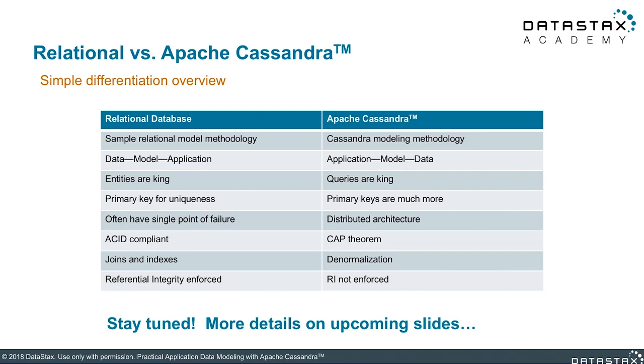Specifically, Cassandra does not provide support for ACID transactions or joins. It does not enforce referential integrity across tables because it can't guarantee high performance of these operations at large scale. These are things we need to be aware of in designing our Cassandra data models. In the next few slides, we'll learn some techniques we can use in our data modeling and application design to deal with this reality, including denormalization and leveraging Cassandra's tunable consistency features.